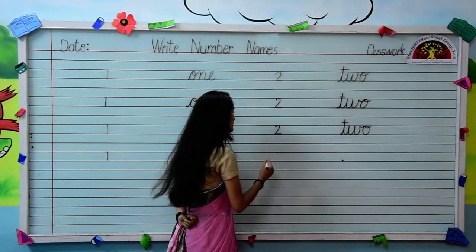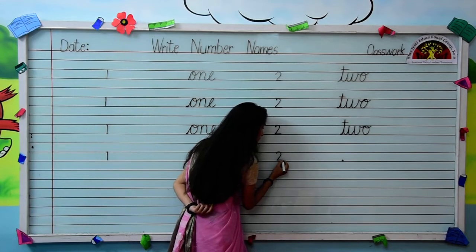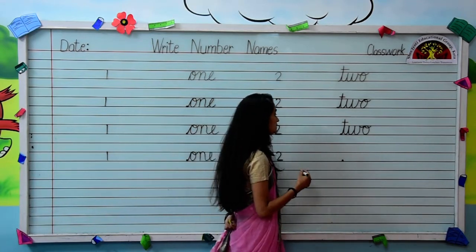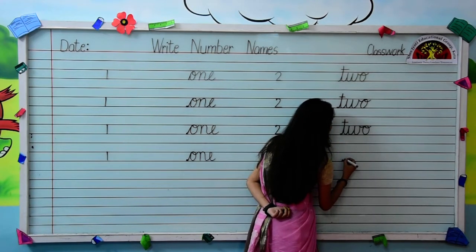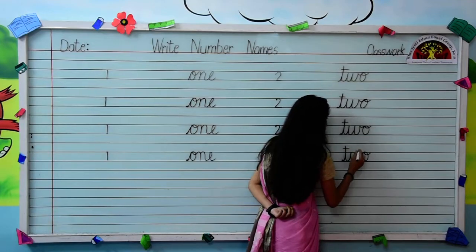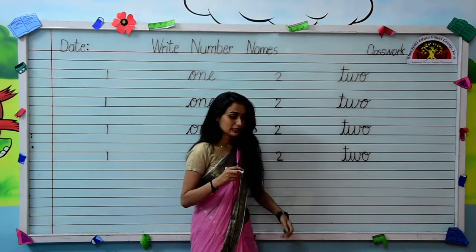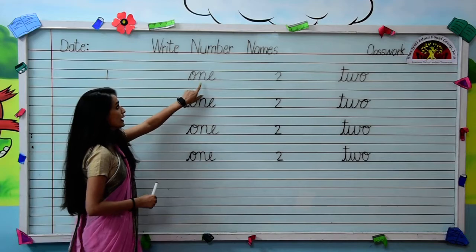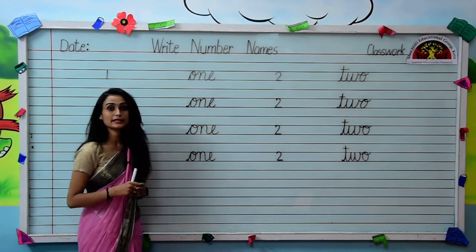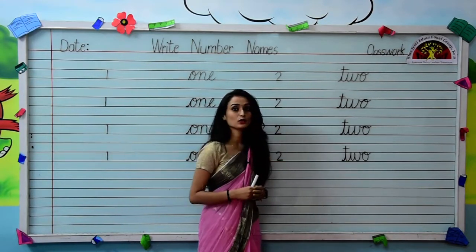Write once again. Look over here, kids — pay attention. Numeral 2. Then we will write the spelling of numeral 2: T-W-O. Let's revise both the spellings once again — O-N-E, T-W-O.